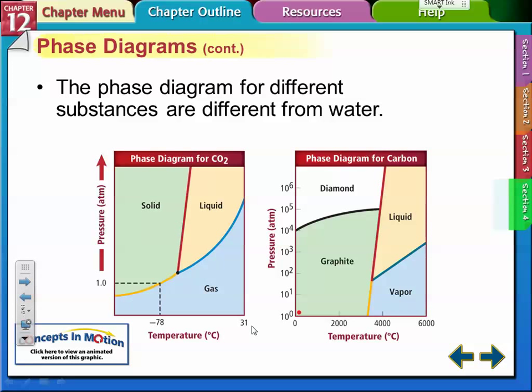These are the phase diagrams for a couple different things, for carbon dioxide and carbon. Carbon doesn't look like it has a triple point, really. The triple point for carbon dioxide is here, and you can see it's quite a bit above normal pressure. The temperature is pretty low here for carbon dioxide. It's almost a gas all the time.